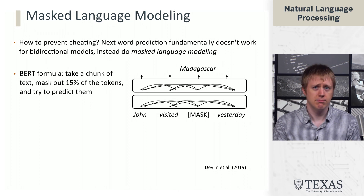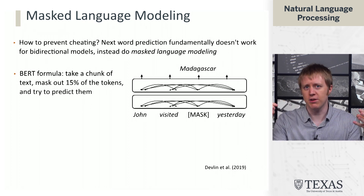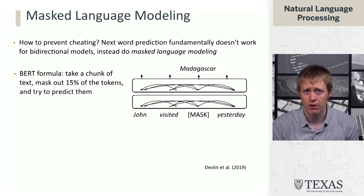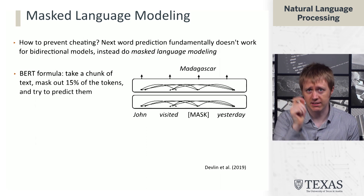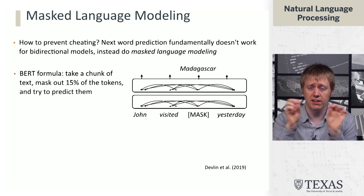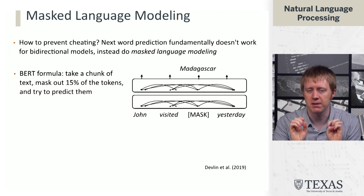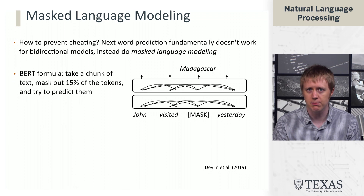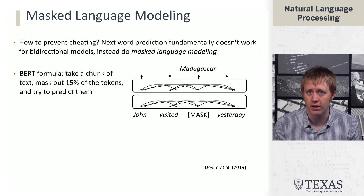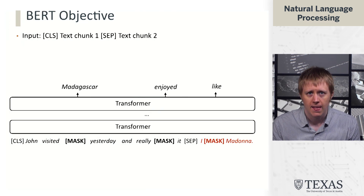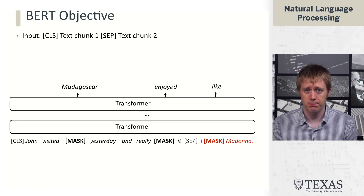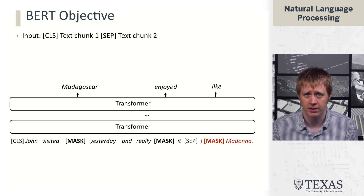We don't do this to every word, because if we replaced everything with masks there would be nothing to predict from. Instead, roughly 15% of the words we're going to try to predict based on the context. This allows the model to look at everything without cheating, because it has no way of seeing 'Madagascar' if just a mask token is in the input and 'Madagascar' is not in the input at all. This is one of the fundamental ideas behind BERT and many of the models that have followed it.